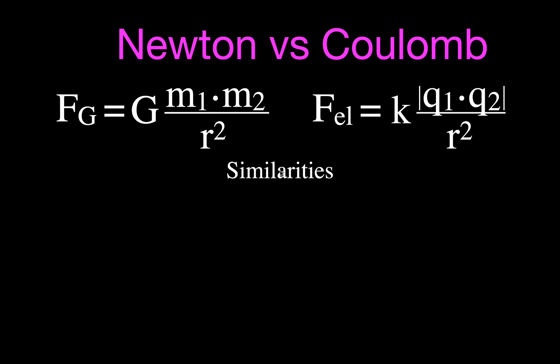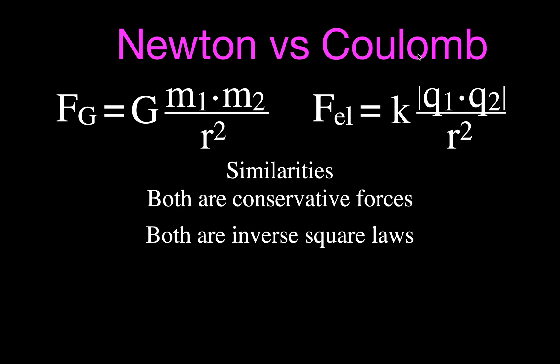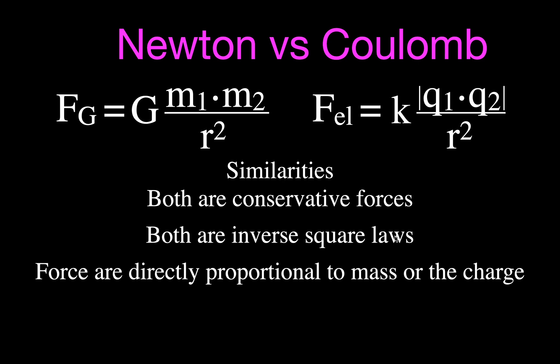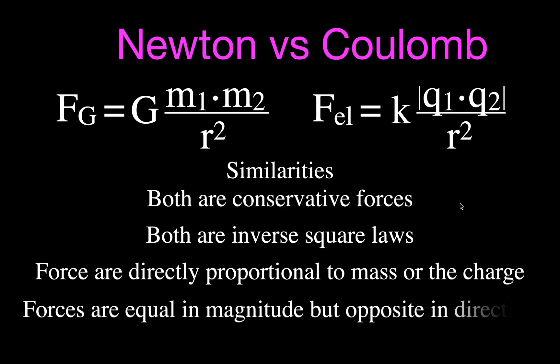So let's talk about some of the similarities — and this is fascinating. Who would think that the way you calculate force is so similar for masses and charges, things that seem so different? First, they are both conservative forces: no energy is lost through those forces, unlike friction. They are both inverse square laws, meaning the force is inversely proportional to the square of the distance. And the force is directly proportional to the product of the masses or the product of the charges. Finally, the forces are always equal in magnitude and opposite in direction.